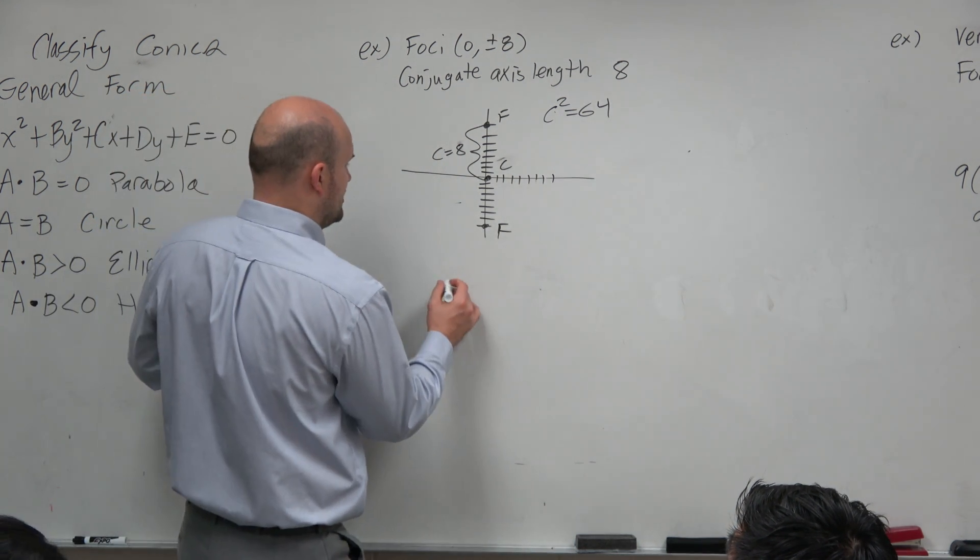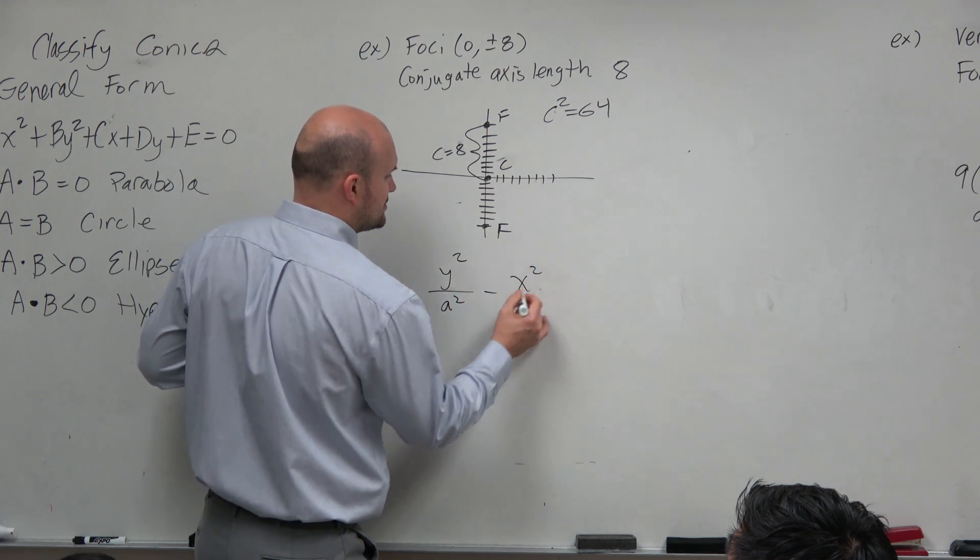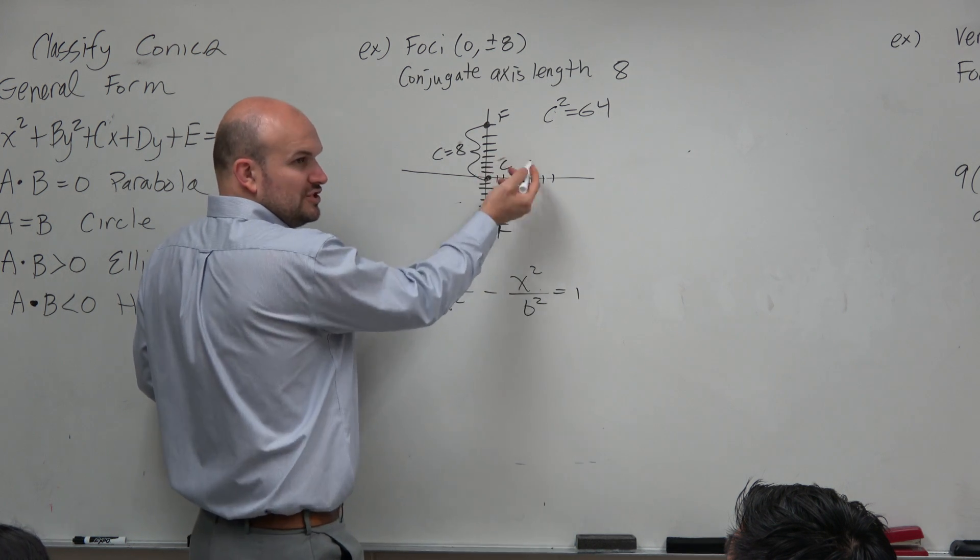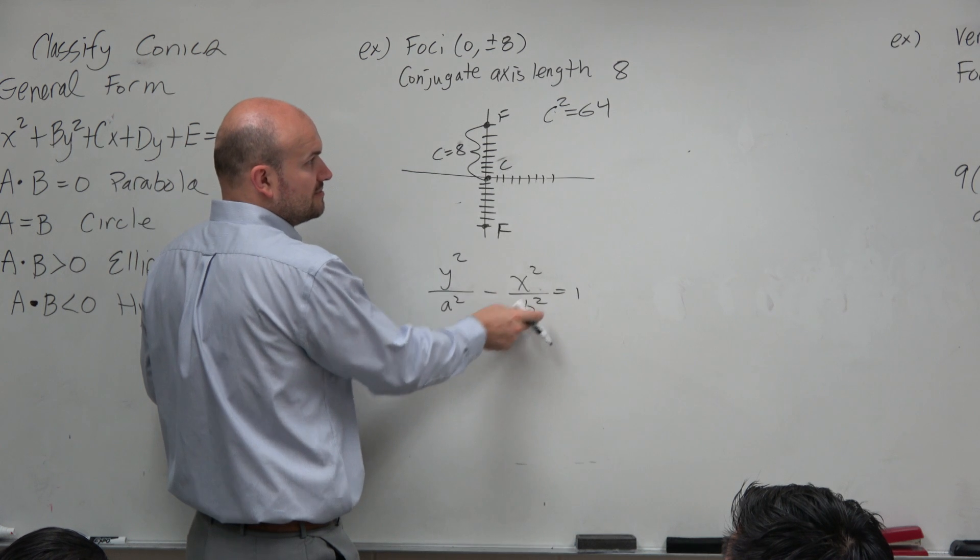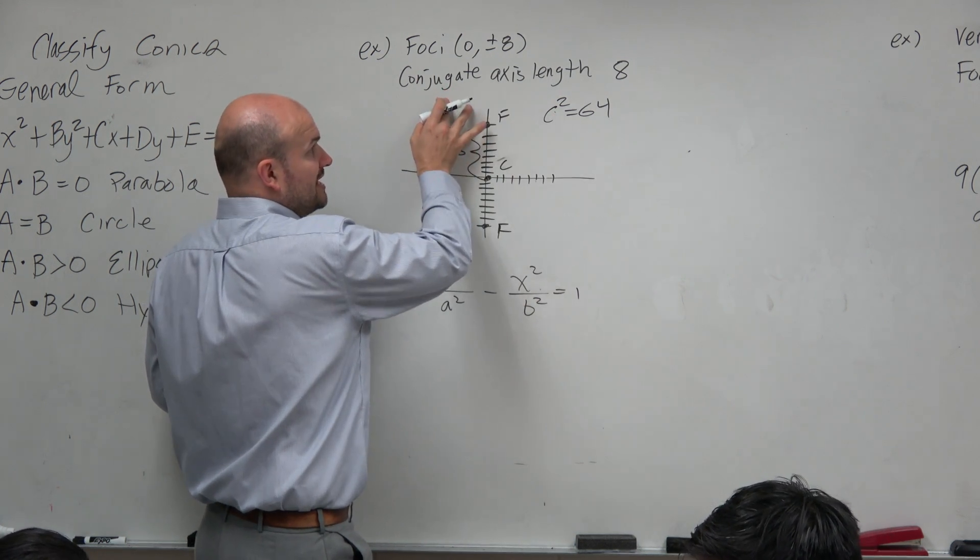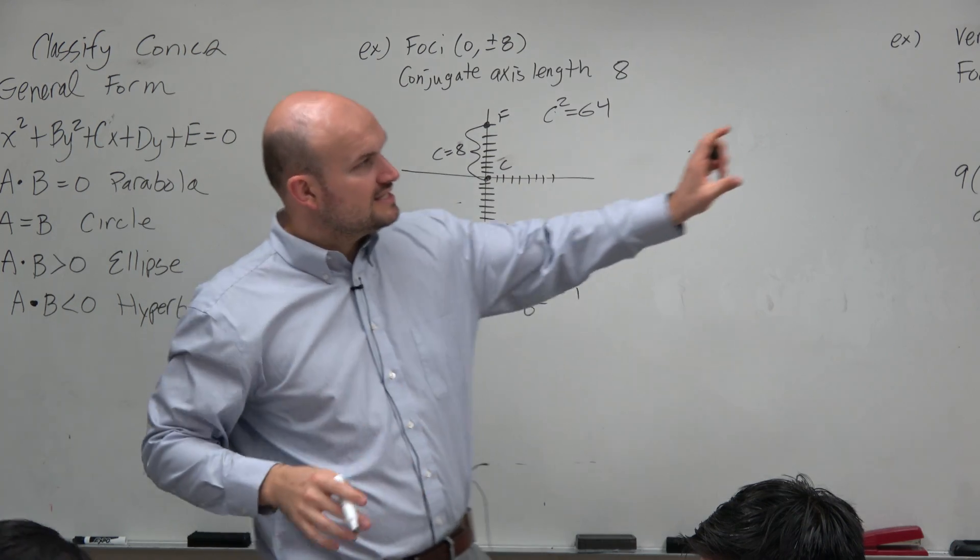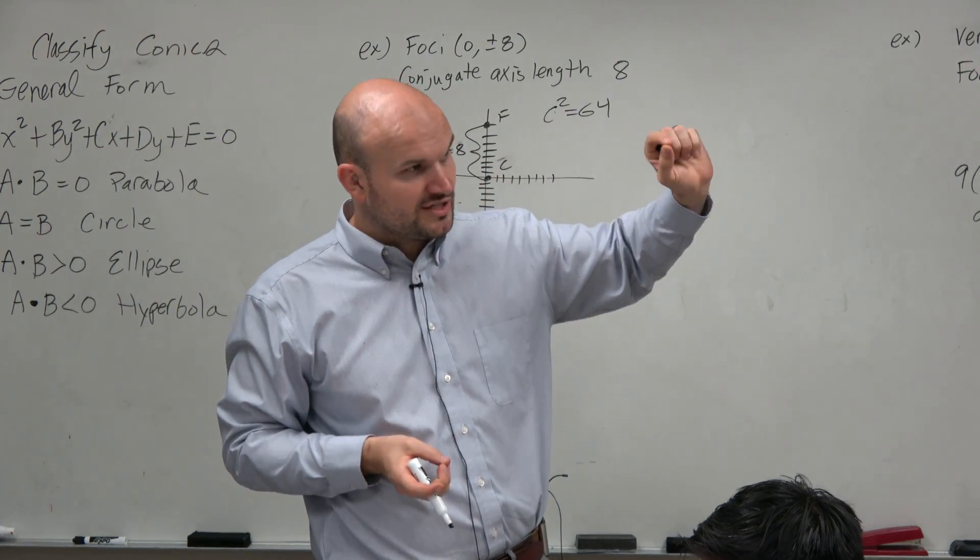So I know that I have y squared over a squared minus x squared over b squared is equal to 1. I'm not subtracting h and k because I know h and k are 0. Now I need to figure out what a squared and b squared is. I only know c squared. So I go to the next one. The conjugate axis length. The conjugate axis is the distance from your co-vertex to your other co-vertex, or the distance between your co-vertices, right?